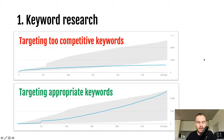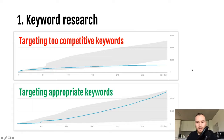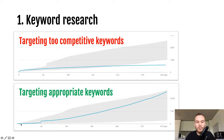I want to give you an example of what happens if you do this step correctly versus if you skip it. In the top graph, I have a video I did almost a year ago. I got some views from subscribers at first, then it dropped off very quickly. The reason is I targeted far too competitive keywords for my channel size, so even after almost a year I don't even have a thousand views.